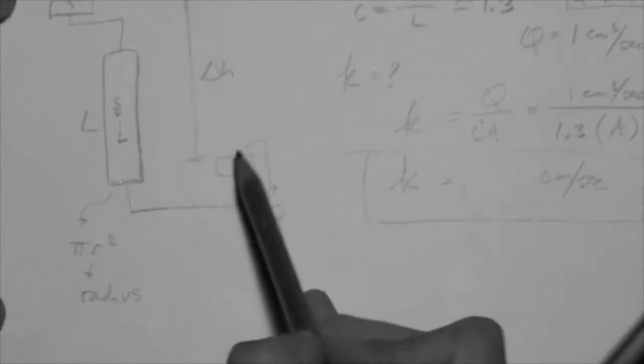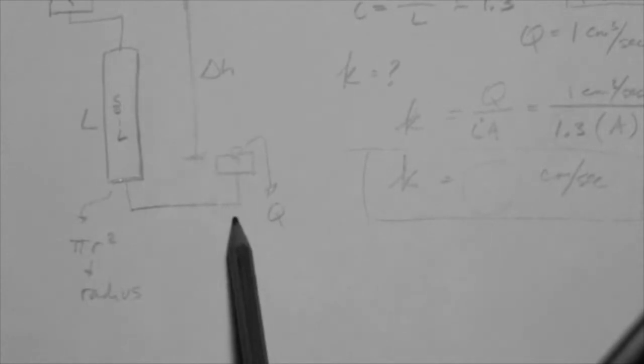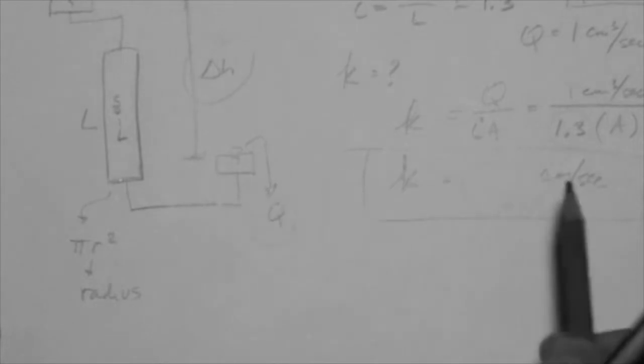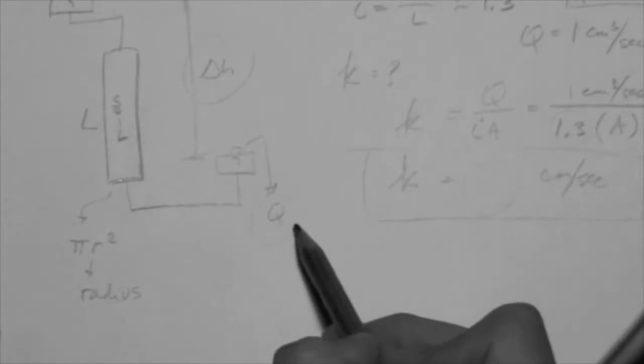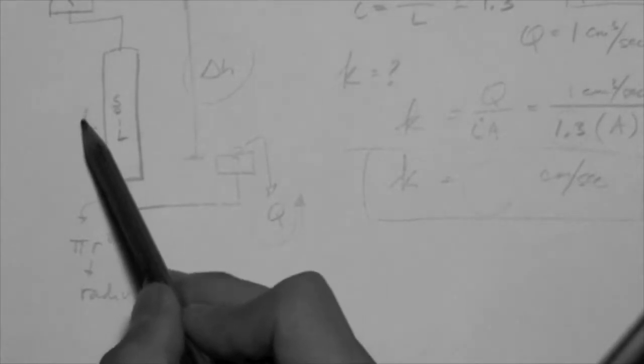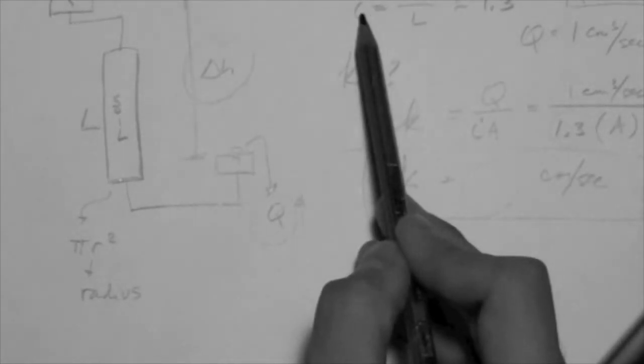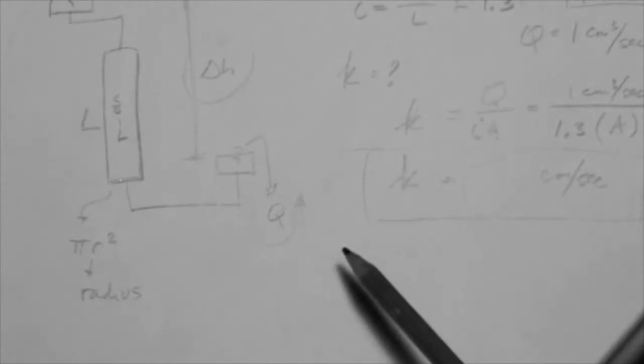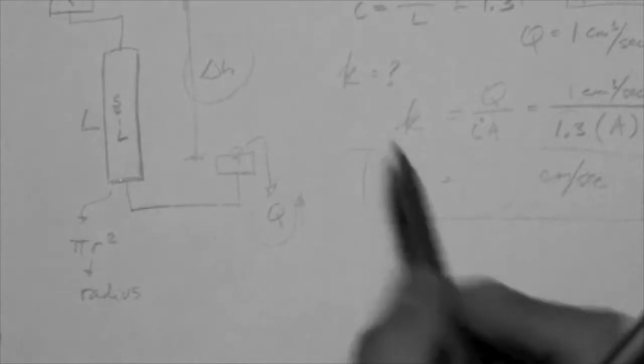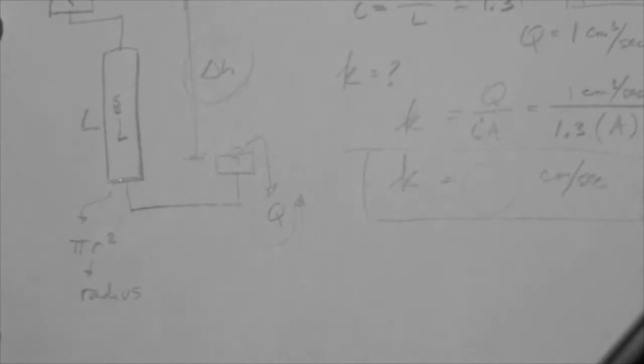But what happens? Let's say that we increase the gradient. Remember that we said that we increase the gradient by either lowering this reservoir, or raising this one, or both. Just increasing the delta H. What's going to happen? What do you think will happen to Q if you increase delta H? Well, Q will rise. Right? So, if L stays constant, and you increase delta H, what happens to the gradient? The gradient goes up. Right? If the gradient goes up, because delta H went up, then the flow rate that you measure is going to go up.